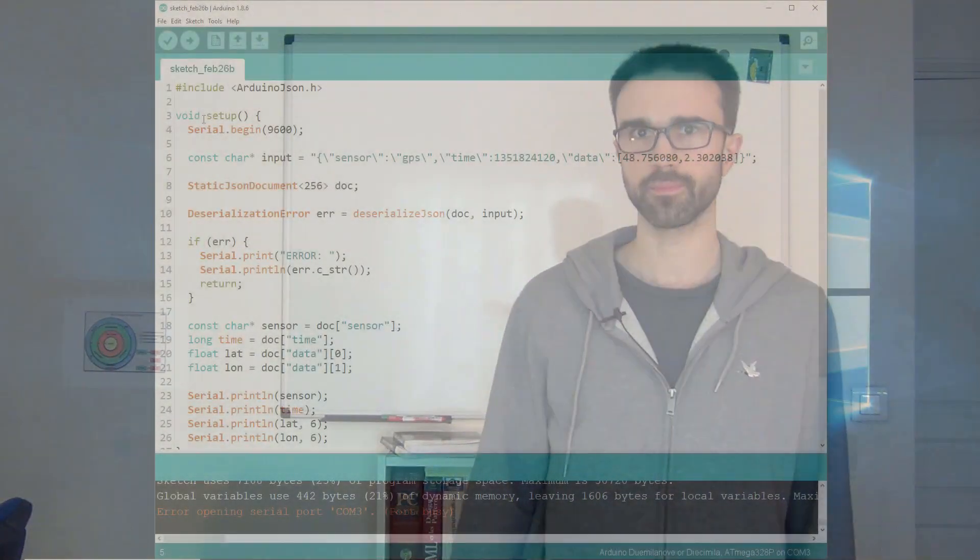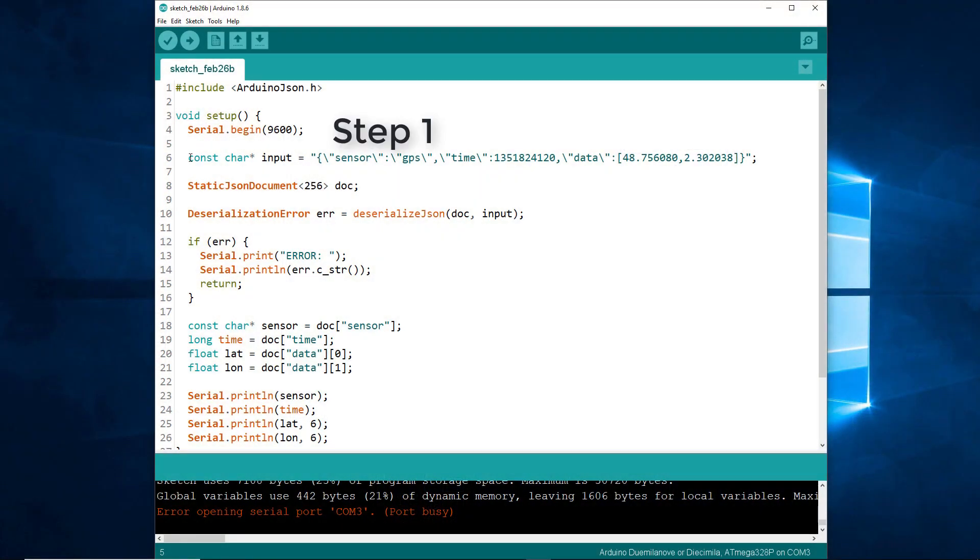Let's recap. Step 1, we created the input string to hold the JSON document. Step 2, we allocated the JSON document. Step 3, we called DeserializeJSON and checked the error status. Step 4, we extracted the values.